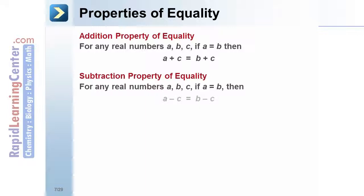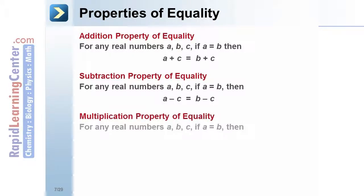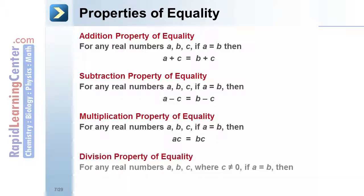Multiplication Property of Equality: For any real numbers a, b, and c, if a = b, then ac = bc. Division Property of Equality: For any real numbers a, b, and c, where c is not zero, if a = b, then a/c = b/c.